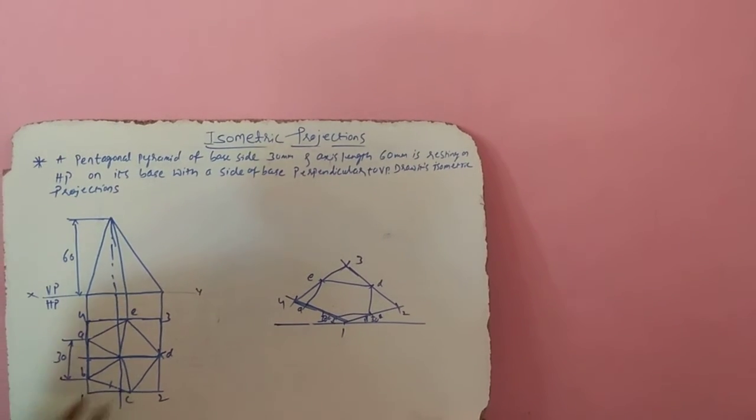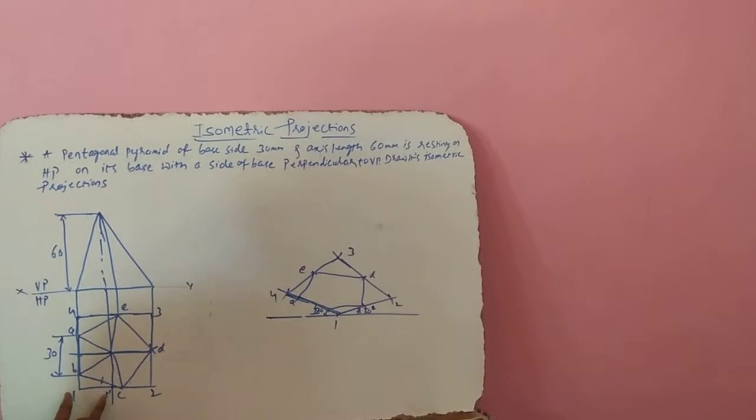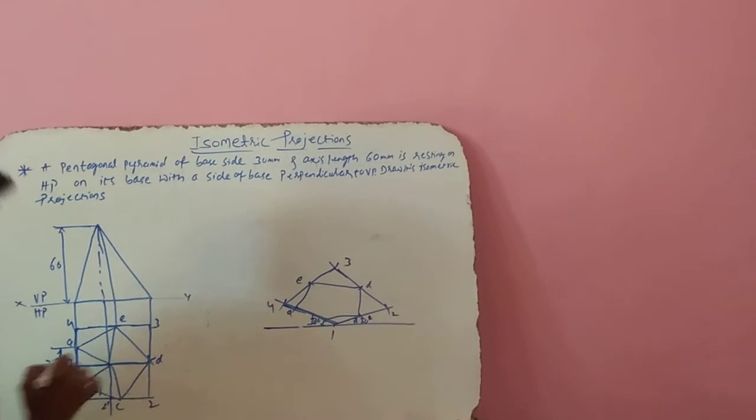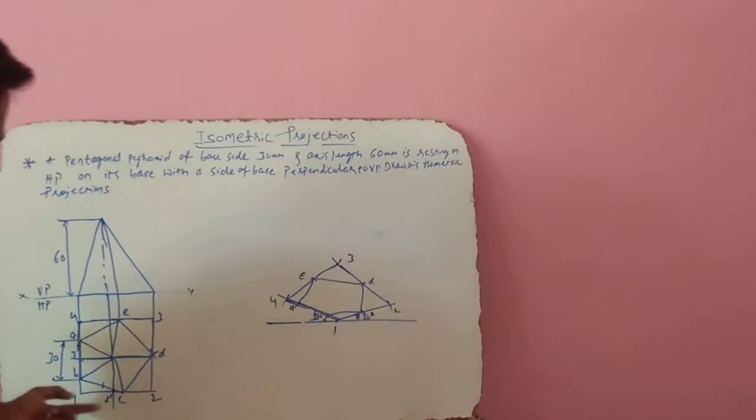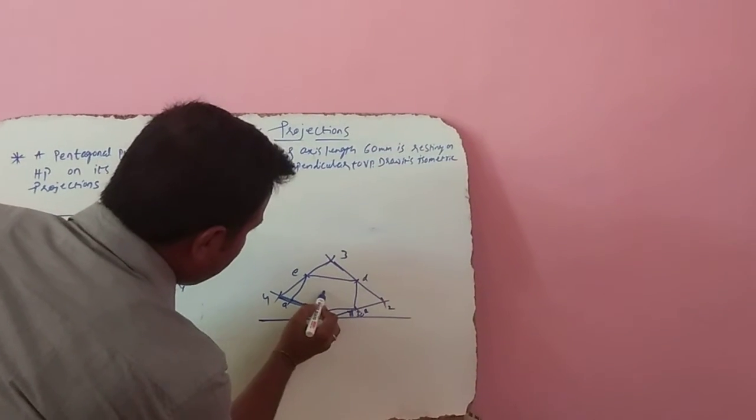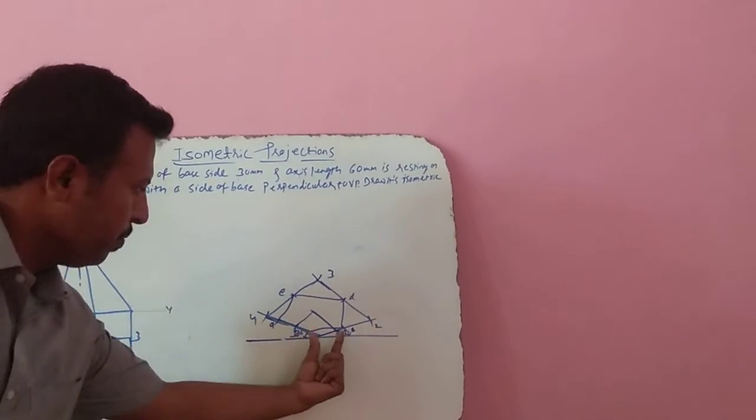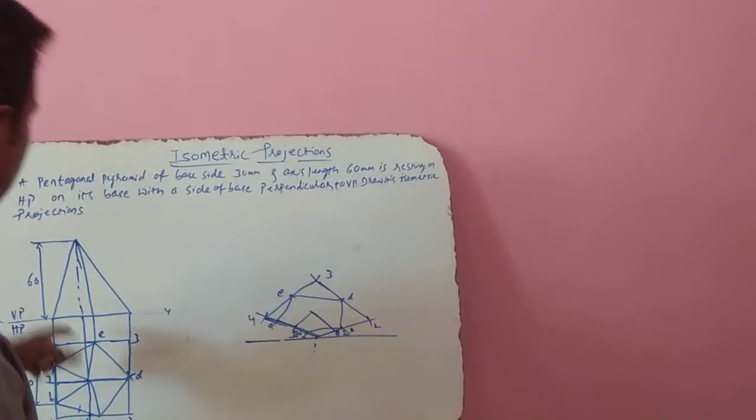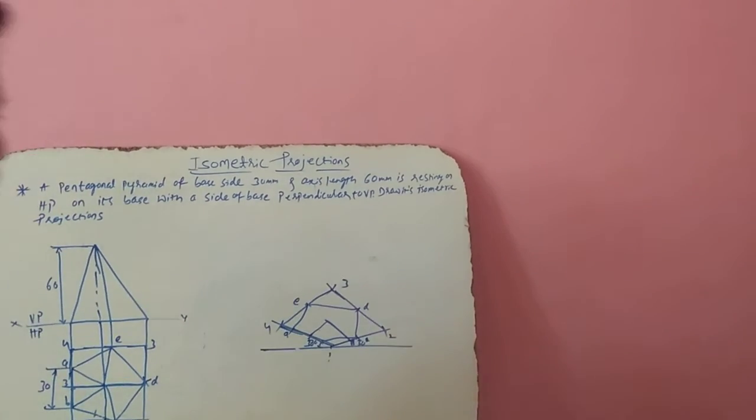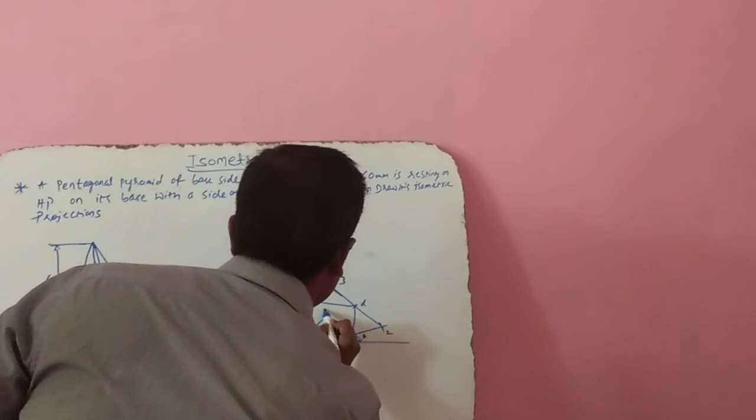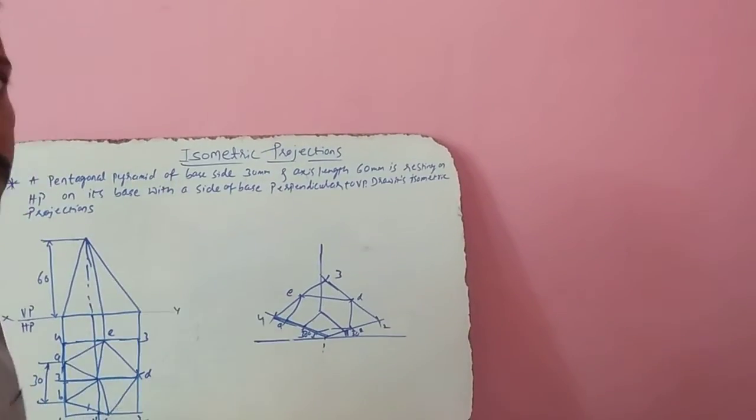Measure what is the length from 1 to 2 dash and 1 to 3 dash. Mark 1 to 2 dash here and 1 to 3 dash here, and draw these lengths parallel to 30 degree lengths. Somewhere it is going to meet at this point. This is 1 to 2 dash, 1 to 3 dash. What is the axis length they have given? It is given in the problem that 60mm. Take isometric length of 60mm, then draw the axis of the pyramid. This should be isometric length of 60mm.